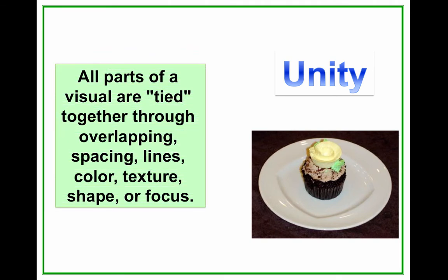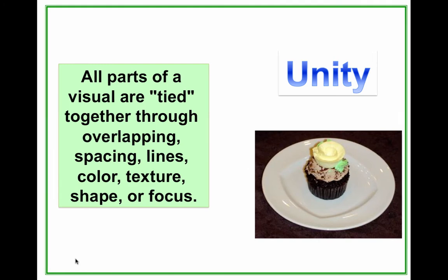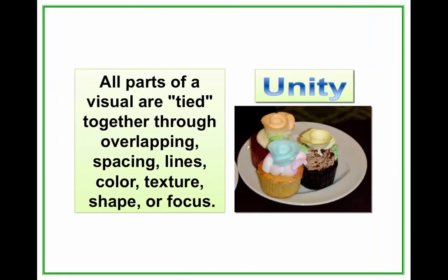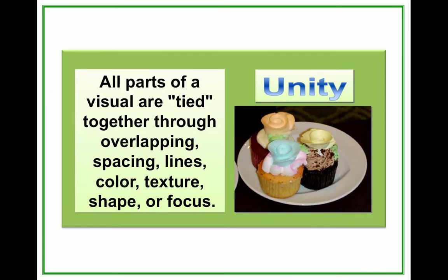Unity is another important concept. Does this look unified? Clearly not. How about if we add the definition that all parts of a visual are tied together through overlapping, spacing, lines, color, texture, shape, or focus? But our visual still is not unified. Let's see what we can do to improve it. Now we've pulled the pieces closer together so it looks much more like a single picture. But by adding a frame around it or a background, we've unified it even more.